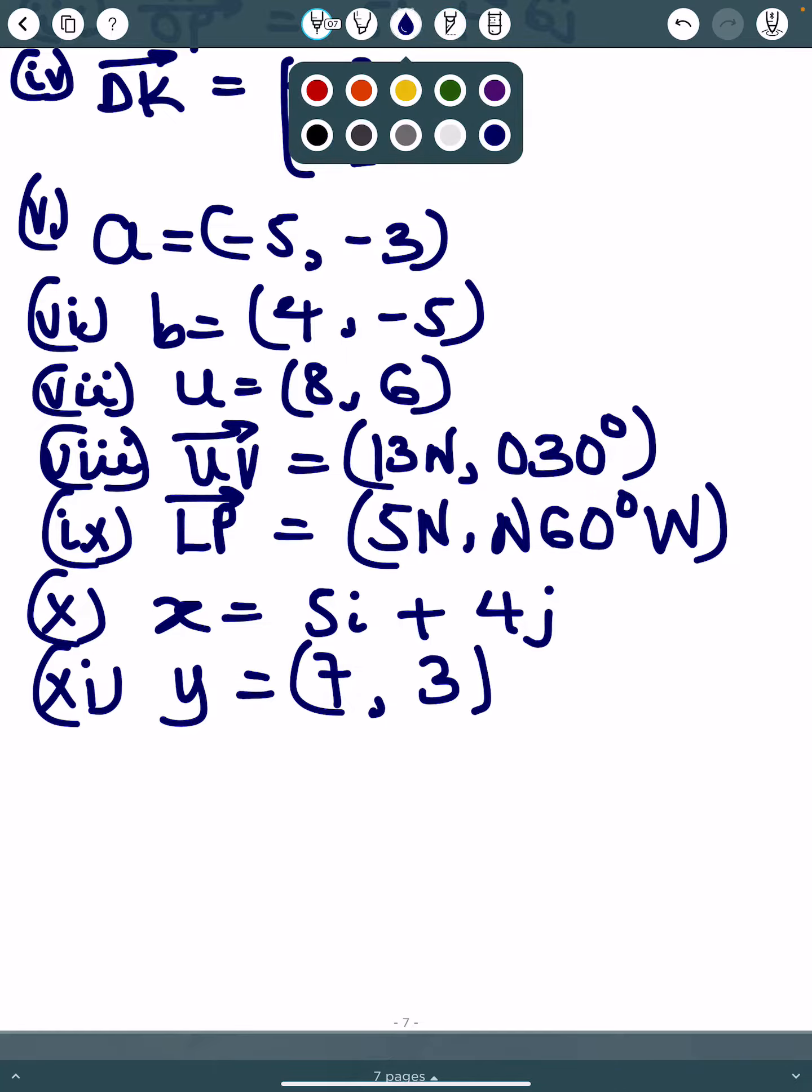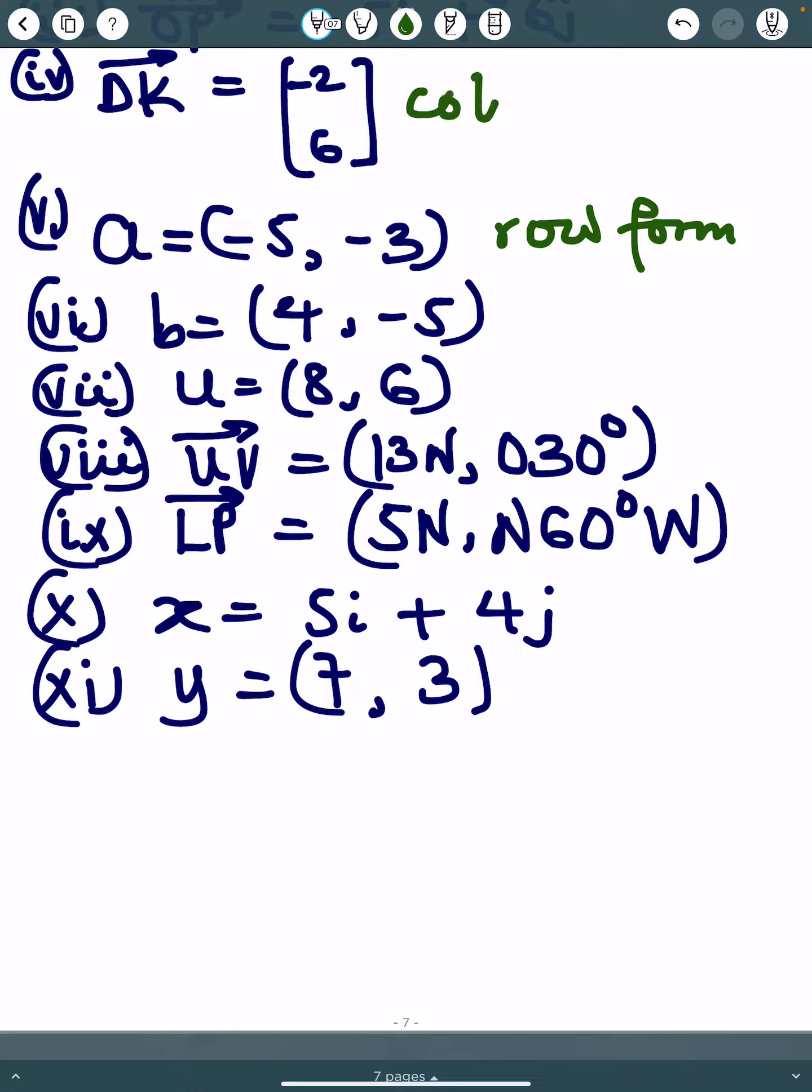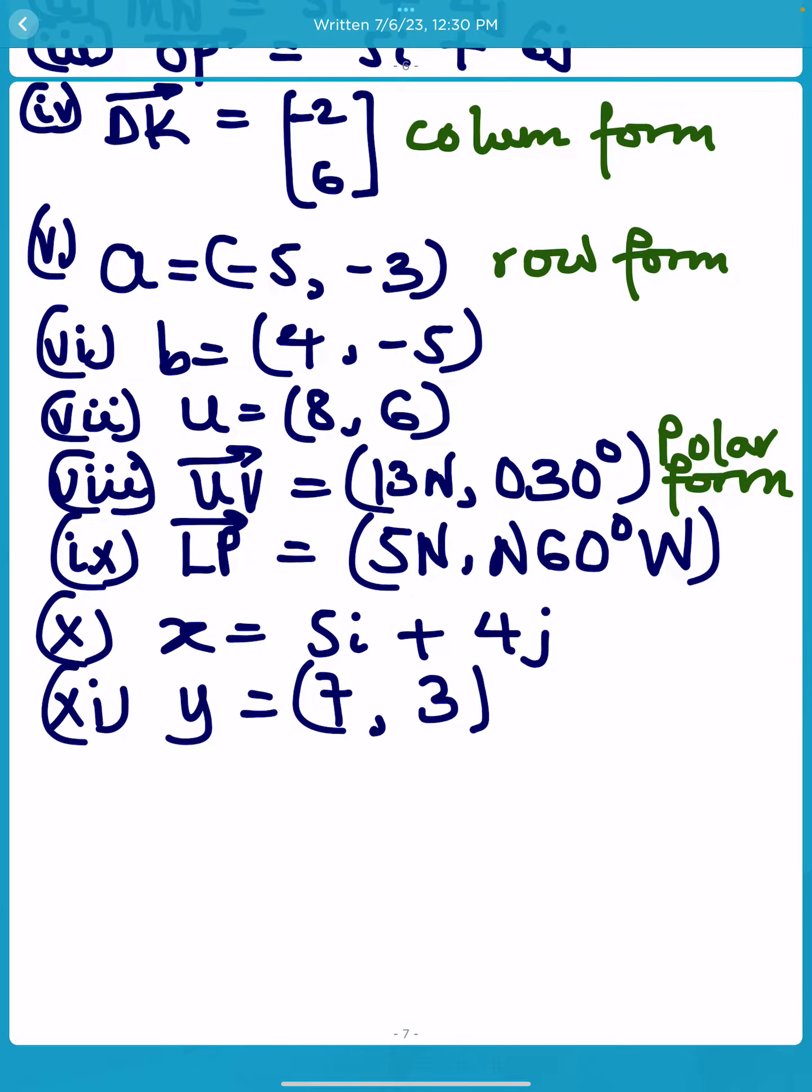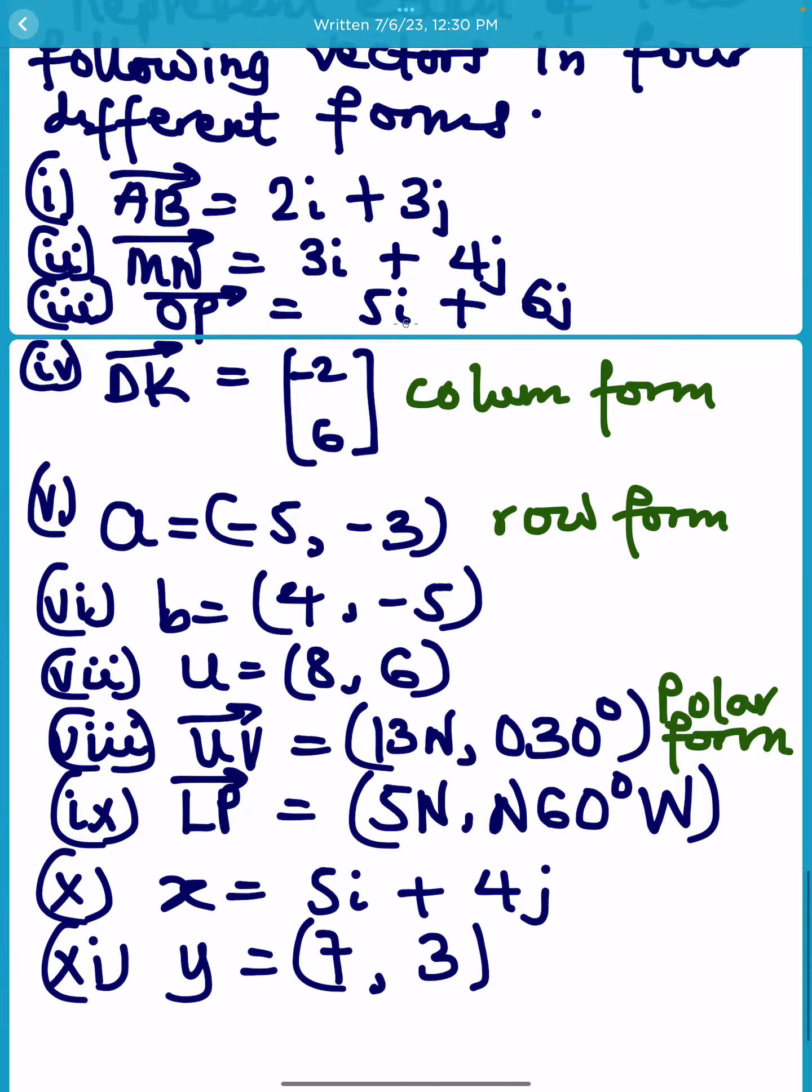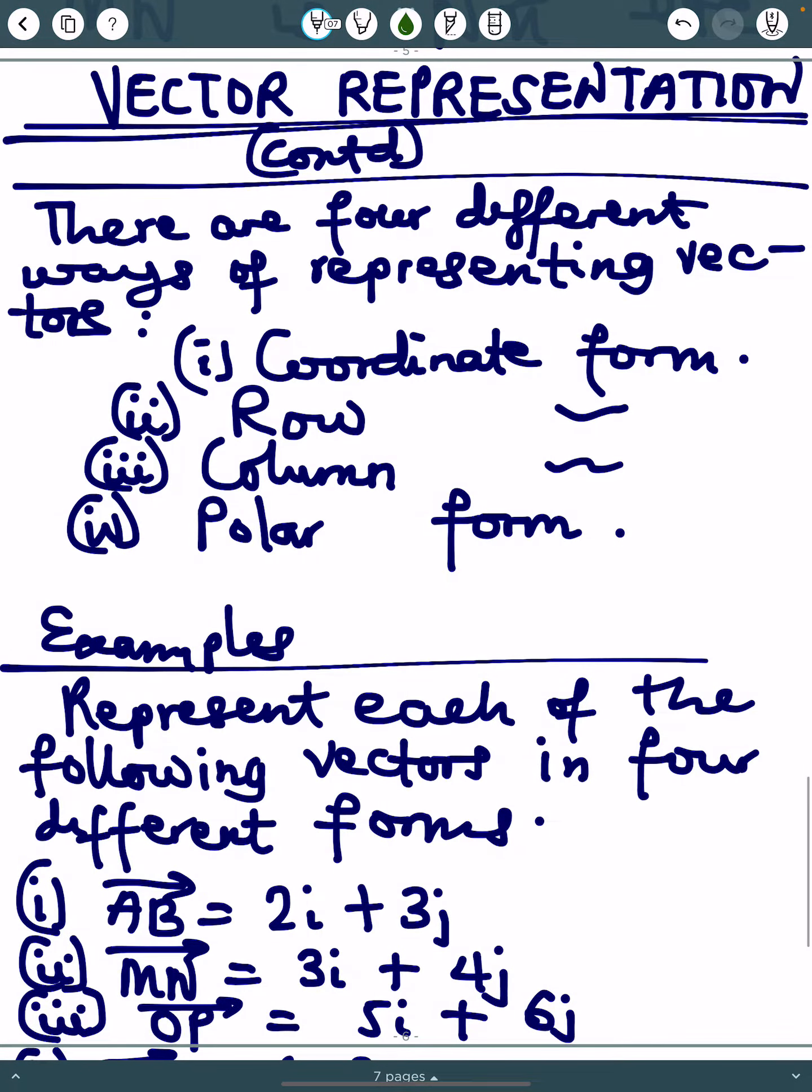This is in row form. This is in column form. This is represented in polar form. This example is represented in polar form, and this one is represented in coordinate form. This is represented in what form? Coordinate form.